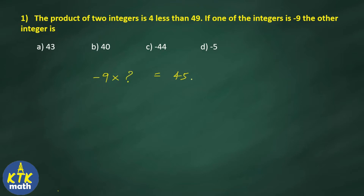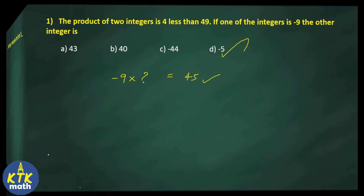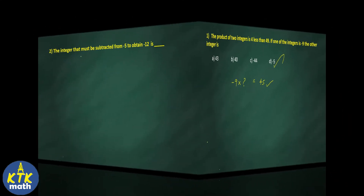So two integers' product is 45 and one integer is minus 9. Minus 9 multiplied by minus 5 gives you 45, because 9 fives are 45 and minus into minus becomes plus. Therefore the answer for question one is minus 5.